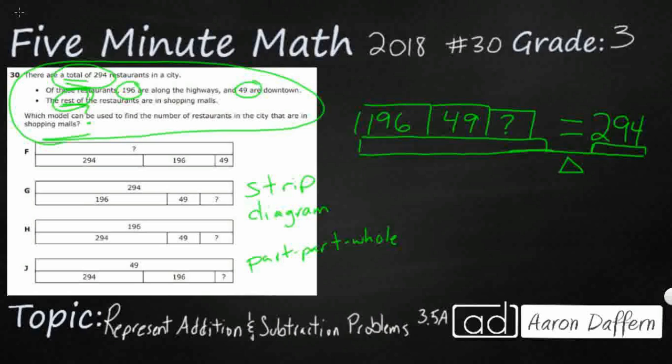So if I wanted to balance these two out, 196 looks like we're going to have some addition signs here. So I can write this as a number sentence: 196 along the highway plus 49 downtown plus my question mark. Those are the ones on the shopping malls. All of that equals 294. So that's an equation to represent this problem.